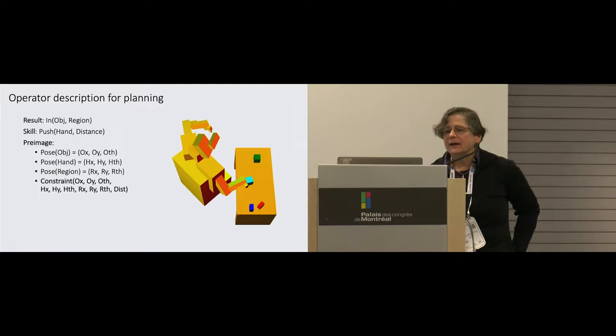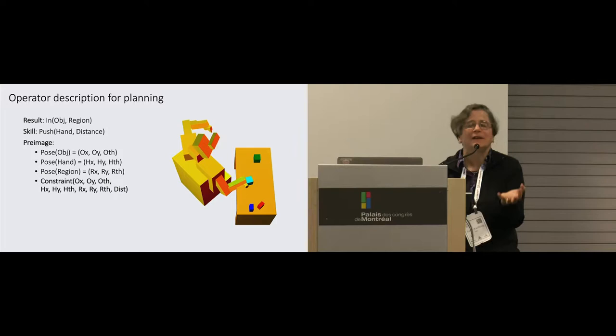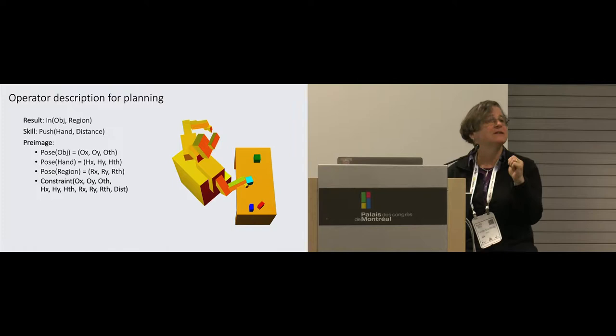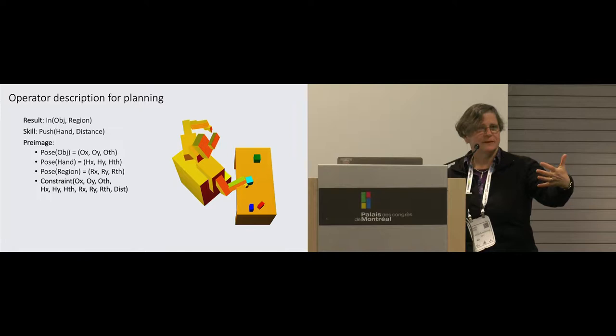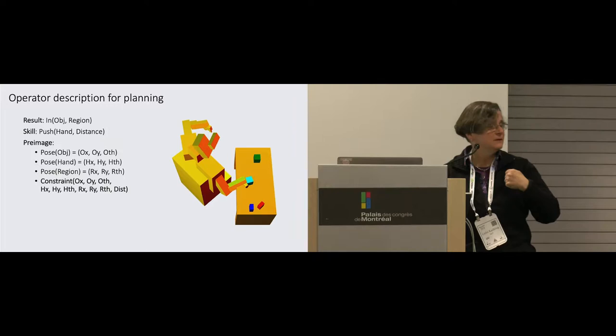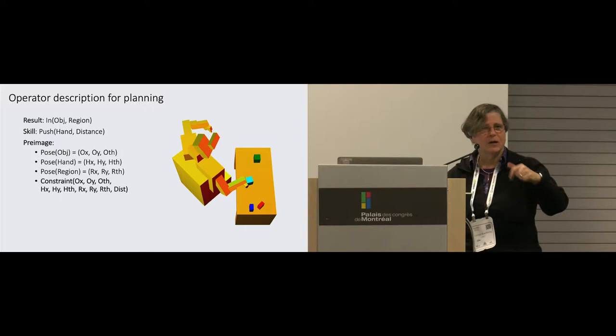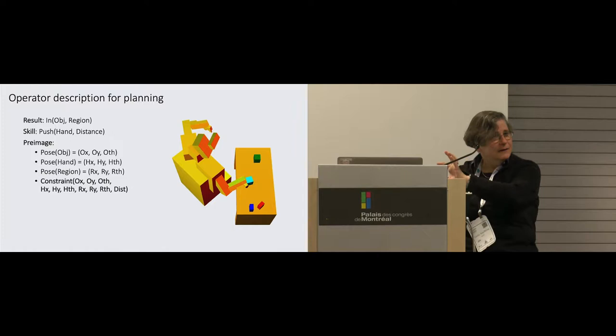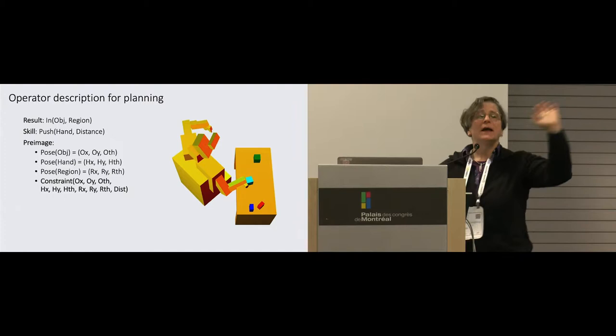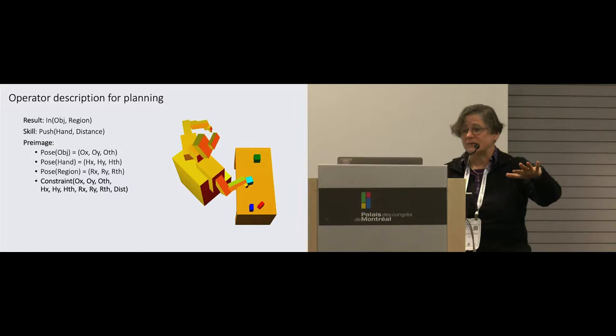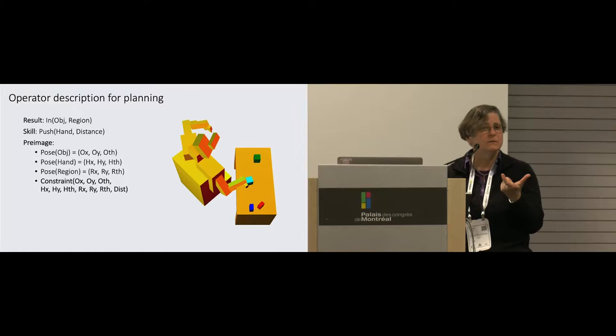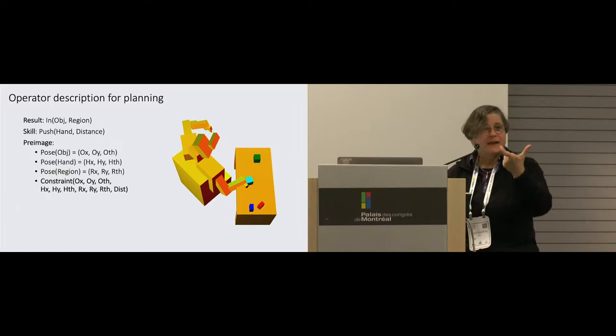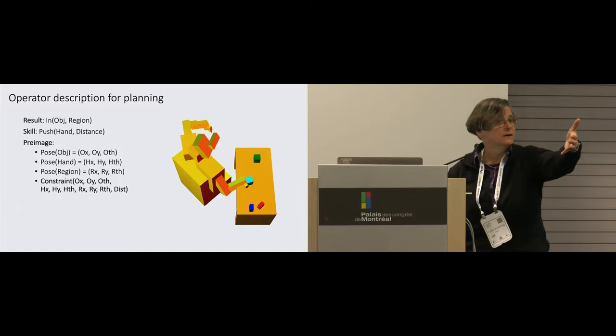What we're interested in coming up with is an operator description that looks like something that came out of an ancient AI planning textbook, except that a bunch of these parameters are continuous. I want to say, under what circumstances is it the case that if I execute this primitive skill, some goal will be achieved? I'm assuming that we already know which objects and which properties of those objects are relevant to this prediction. I want to learn a constraint or a relation on all of those continuous parameters such that if those parameters stand in that relation, then it's very likely that if I execute this primitive procedure, my desired result will happen.